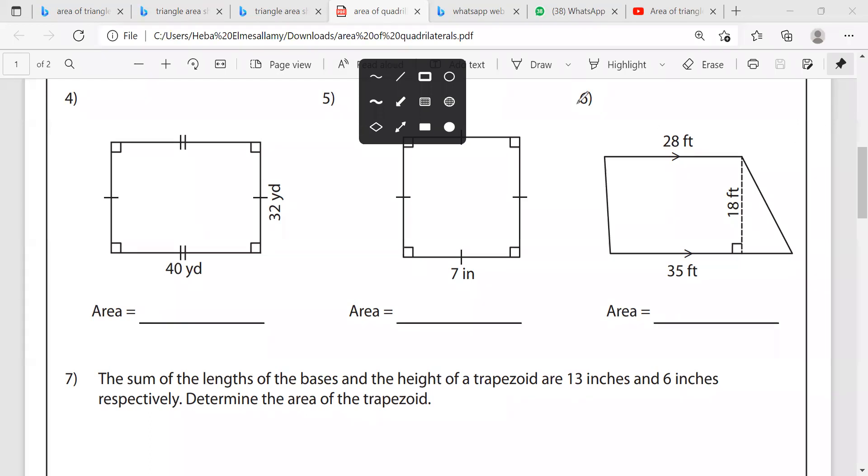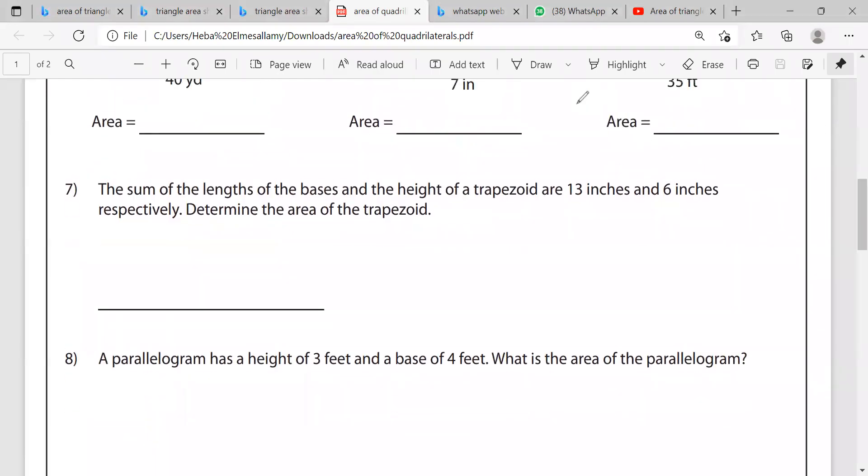Question seven. The sum of the lengths of the bases and the height of a trapezoid are 13 inches and six inches, respectively. Determine the area of the trapezoid. As we know, area equals the mean of the bases: base one plus base two divided by two, multiplied by the height. Here the sum of the lengths of the bases are 13 inches. So base one plus base two is 13, and the height of a trapezoid is six inches.